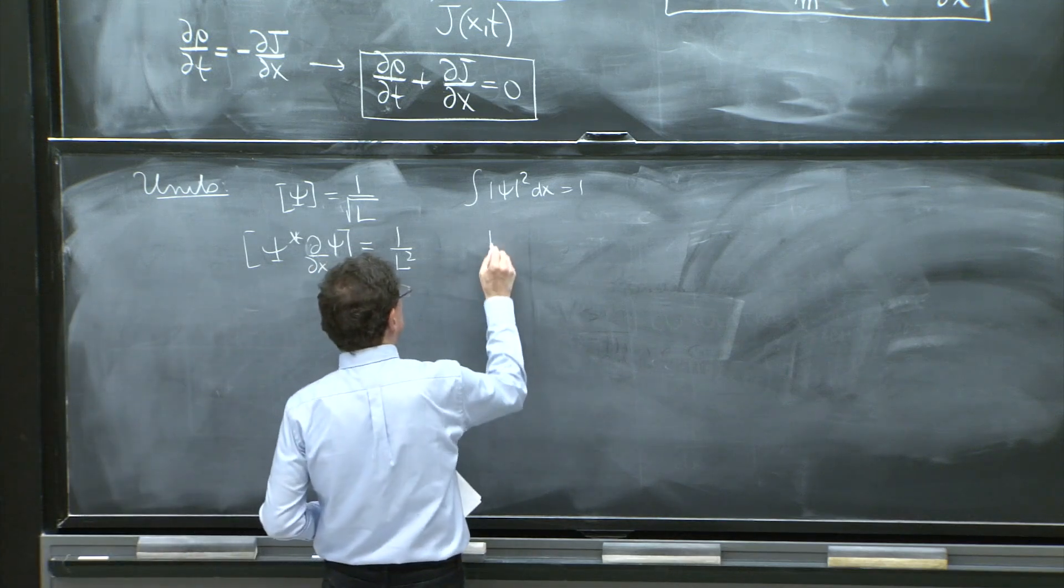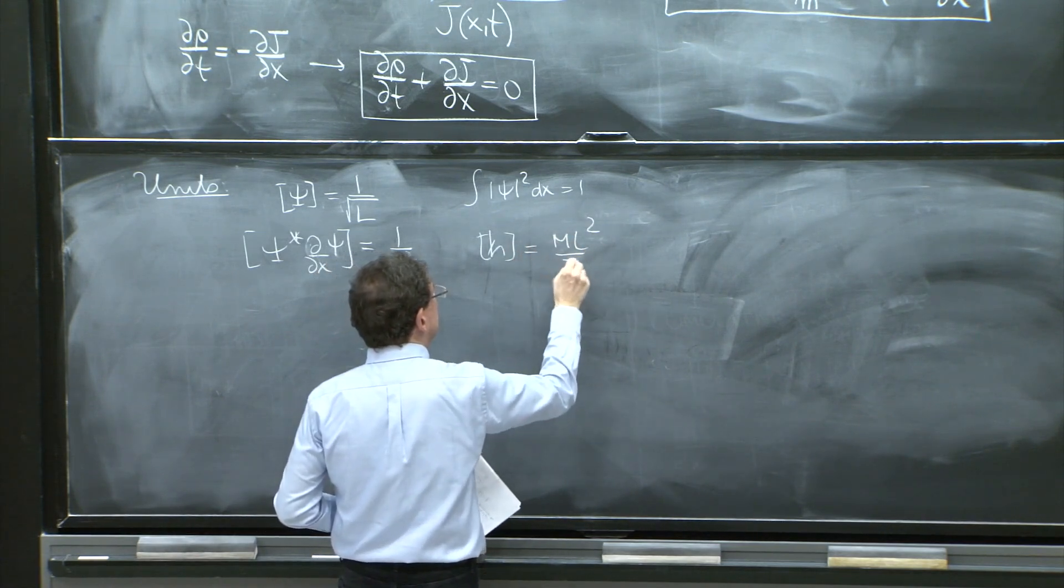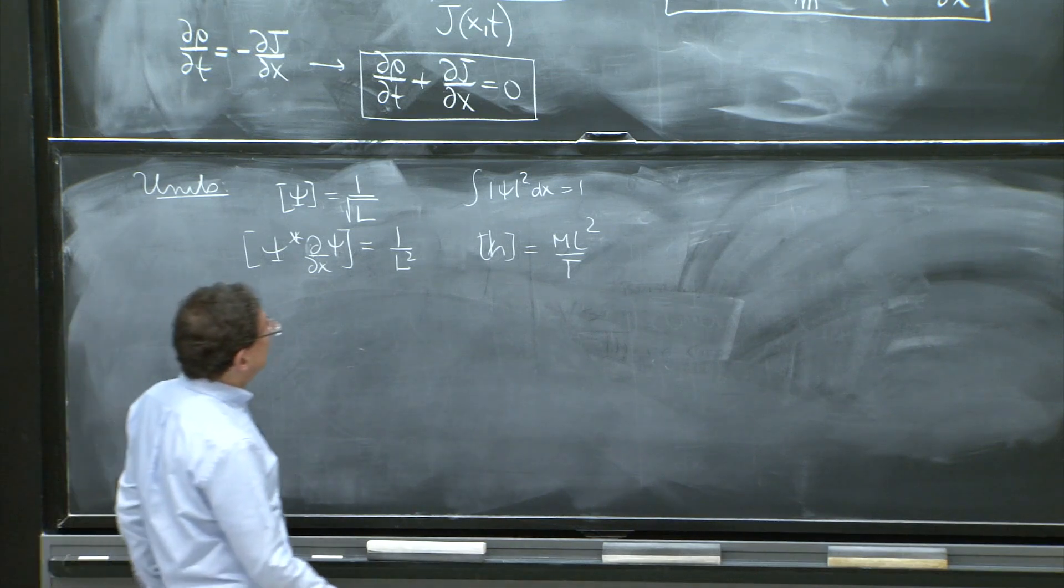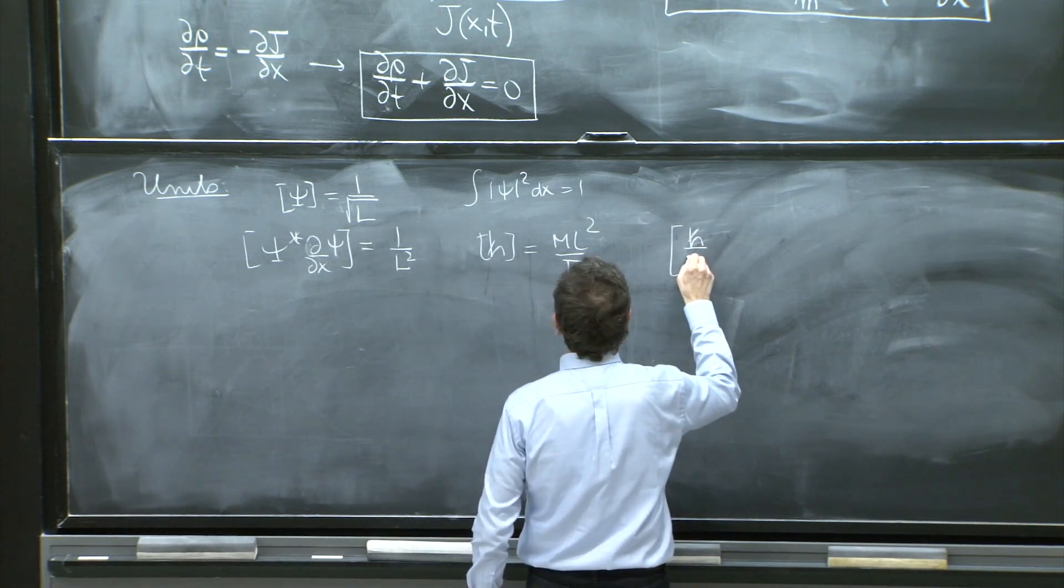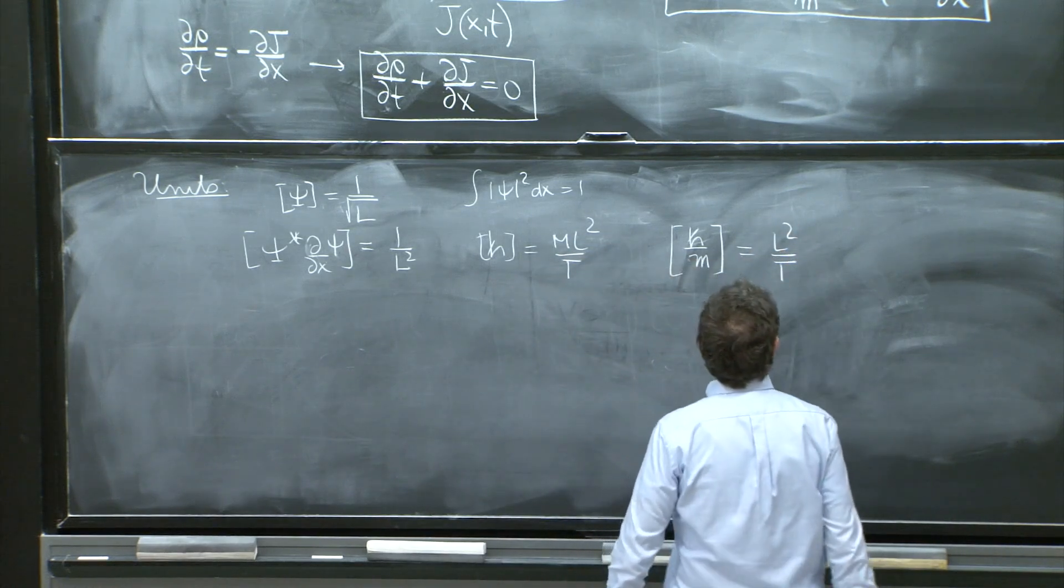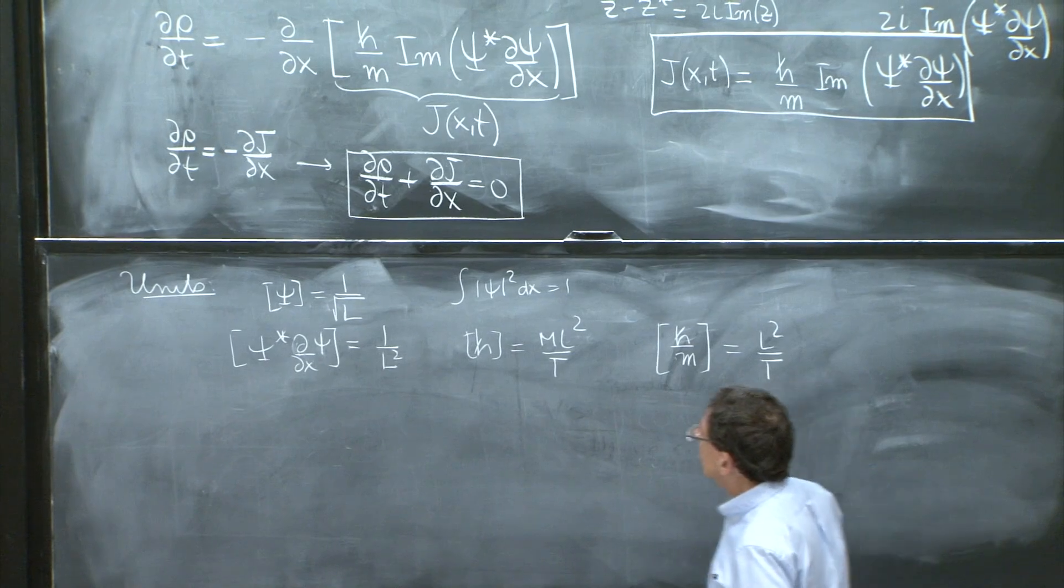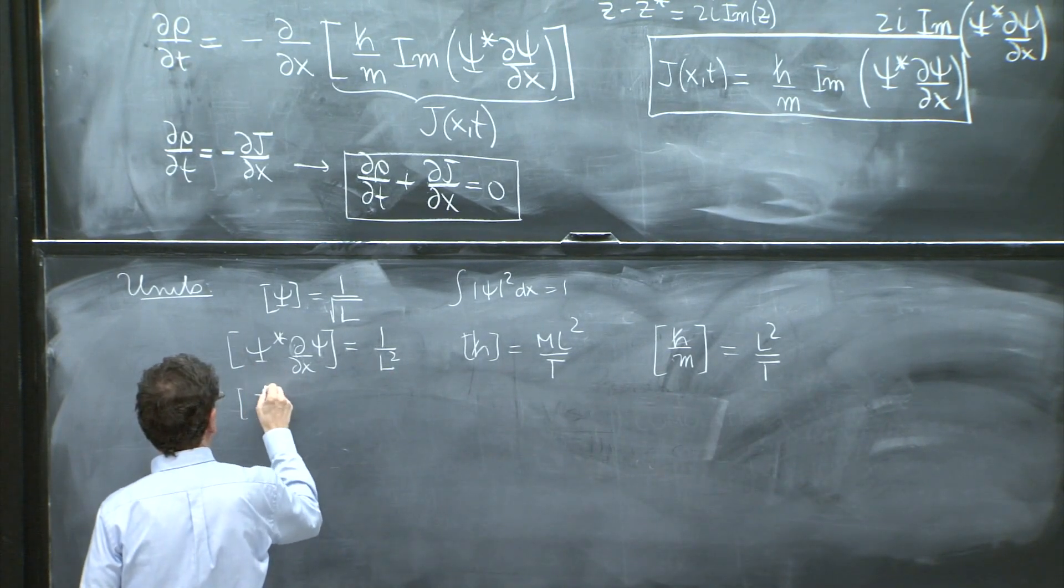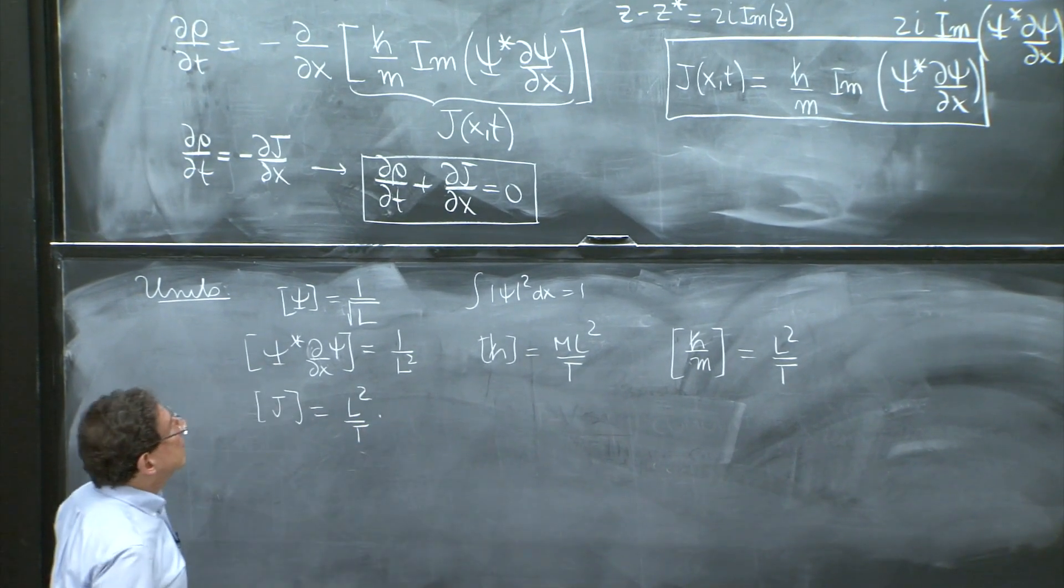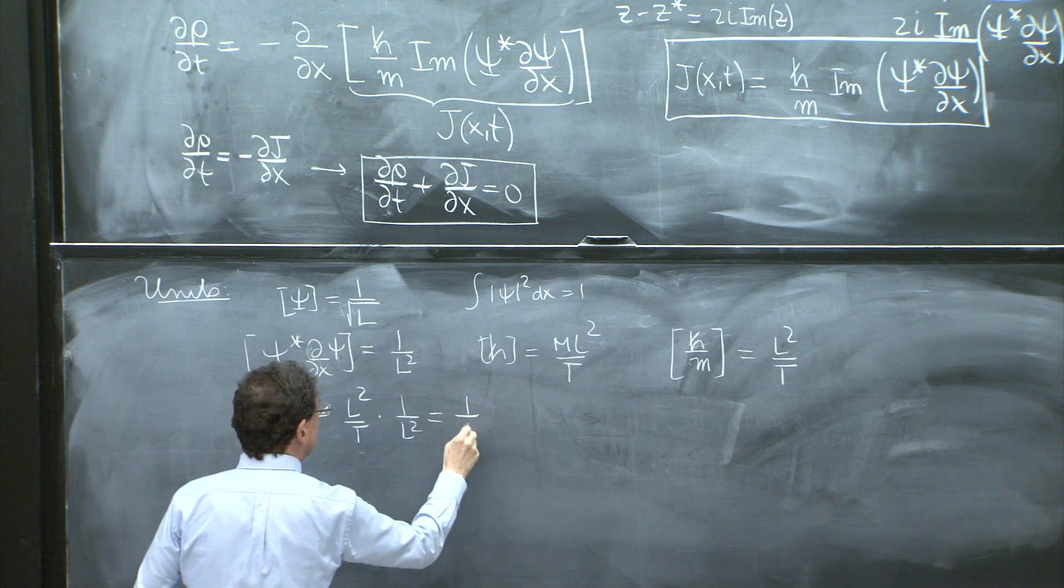And then you have h bar, which has units of m l squared over t. We've probably done that before already. And therefore, h bar over m has units of l squared over t. So the current has units of h bar over m. The units of current has units of h bar over m, which is l squared over t, times units of this whole thing, which is 1 over l squared. So at the end, 1 over t.